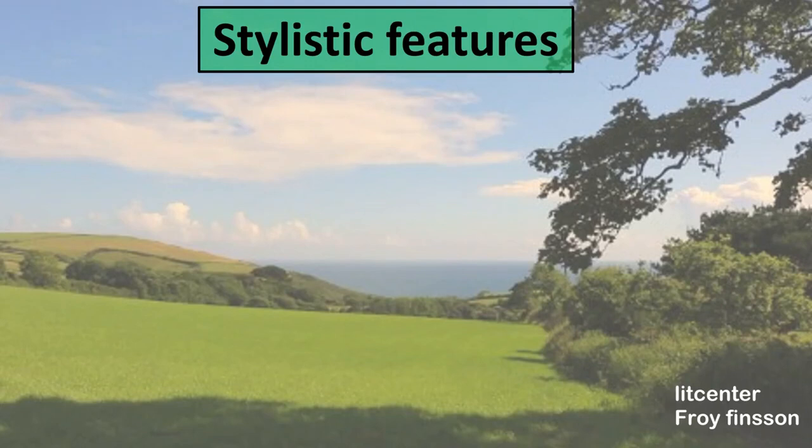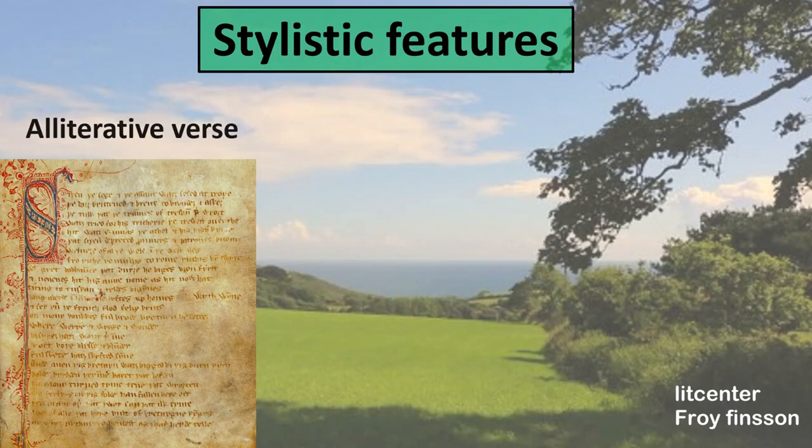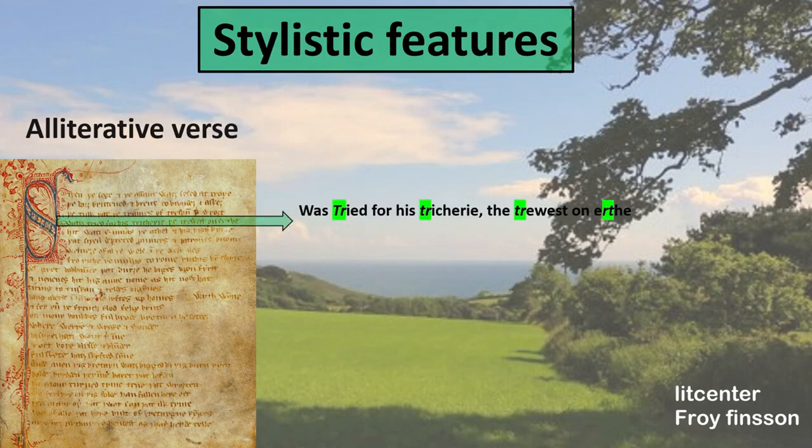Stylistic features. Sir Gawain and the Green Knight is an example of what we call an alliterative verse. Let's look at some sentences to illustrate what that means. "Was triad for his tritulum, the truest on air." A sentence where a specific sound is repeated multiple times we call an alliteration. In this sentence, we can clearly see that the 'tr' sound is repeated.